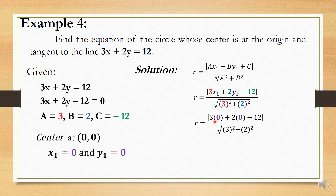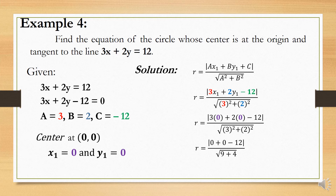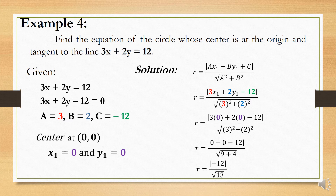So the absolute value of 3 times 0 plus 2 times 0 minus 12, all over the square root of 3 squared plus 2 squared. Simplify: we have the absolute value of 0 plus 0 minus 12, all over the square root of 9 plus 4. This gives the absolute value of negative 12 over the square root of 13. Since the numerator is an absolute value, the result is always positive. Therefore, the radius is 12 over the square root of 13.